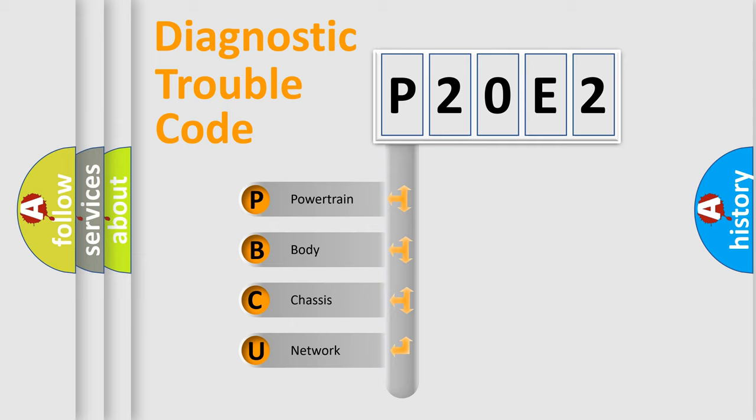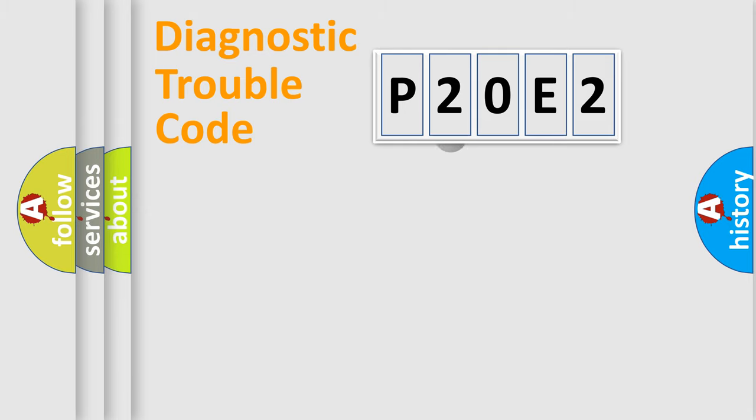We divide the electrical system of automobile into four basic units: Powertrain, Body, Chassis, and Network. This distribution is defined in the first character code.